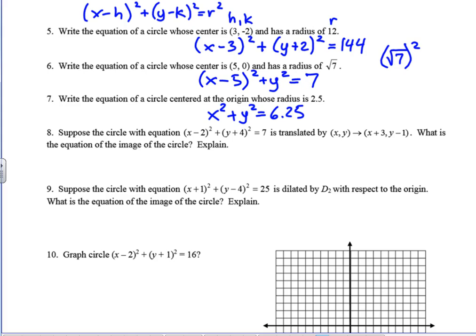Alright, so those are just really straightforward questions. Sometimes we see those, just write the equation, identify. Those are just a matter of, they're not really hard. 8 and 9 add a little bit of complexity because they involve a prior topic. So for 8, it says, suppose we have this circle with this equation and we're going to translate it. So when you look at this translation, what you should see is that we're sliding it to the right 3 and down 1. And what is the equation of the image of the circle?